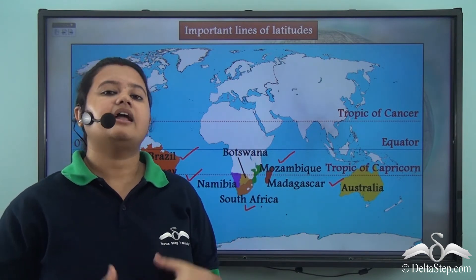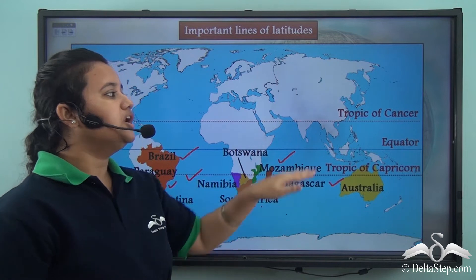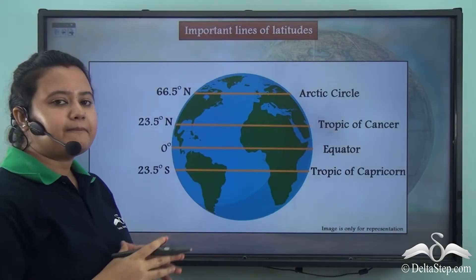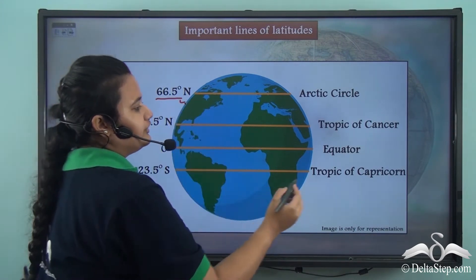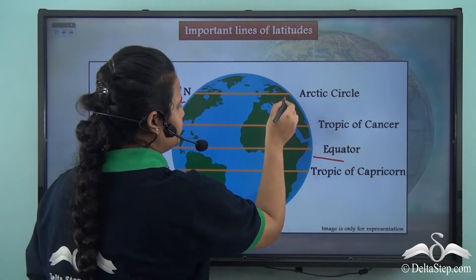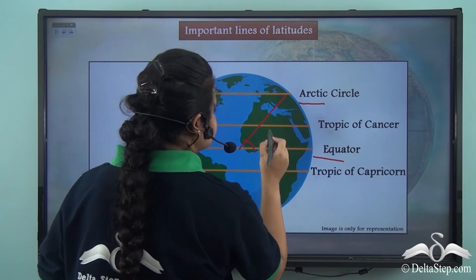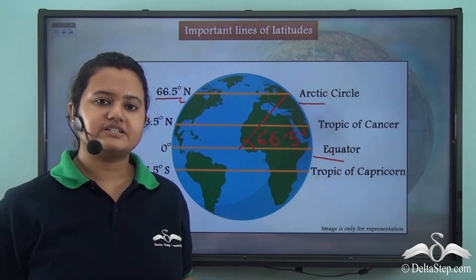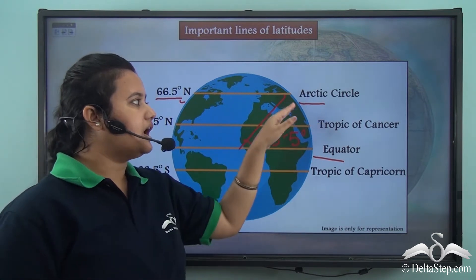Apart from these, there are other important lines of latitude. There is another important line of latitude that lies to the north of the Tropic of Cancer. The line of latitude that lies sixty-six and a half degrees north of the equator is known as the Arctic Circle. So the angular distance between the Arctic Circle and the Equator is sixty-six and a half degrees.